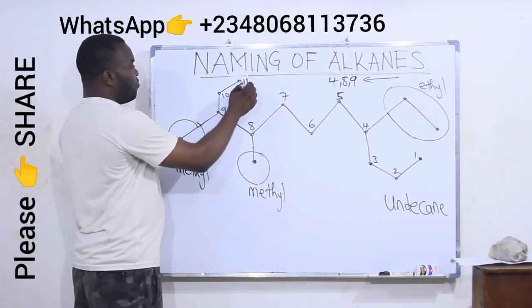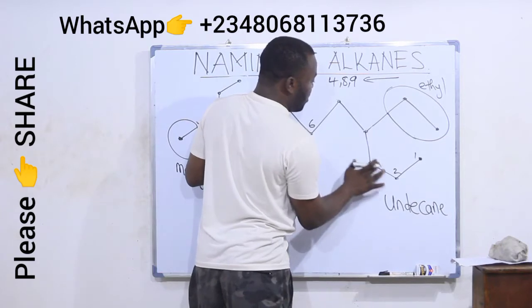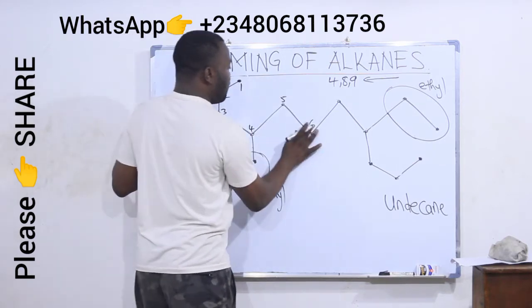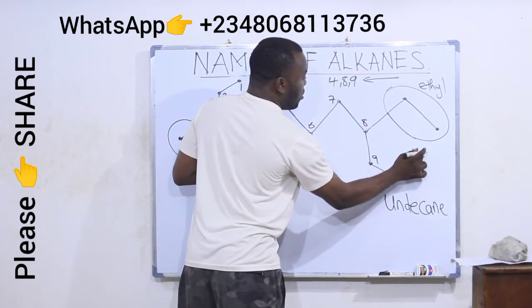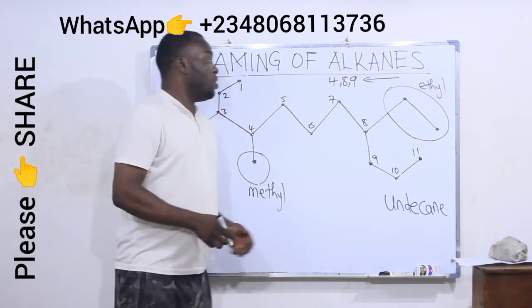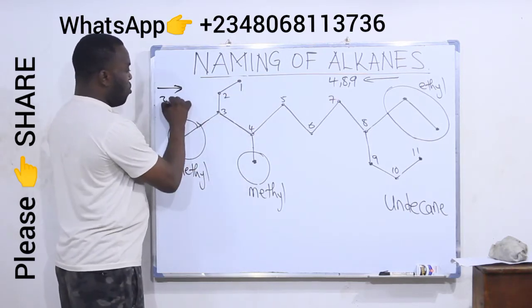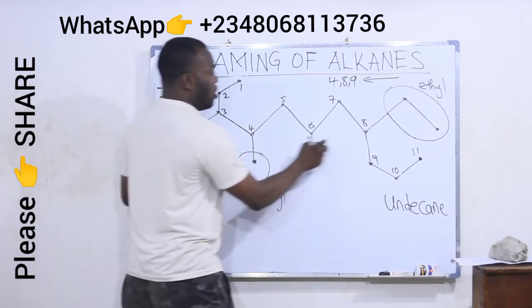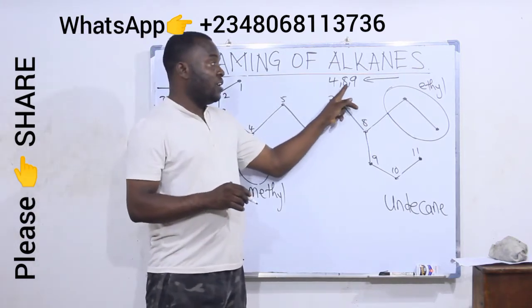Now what if I number from the other direction? The rule says number from the side that will give the attachments a lower number. If I start from the other end and count one through eleven, do not number the carbon atoms in the attachments — number only the carbon atoms in the longest chain. From this direction my attachments will be at positions three, four, and eight, giving 3, 4, 8. So 3, 4, 8 is lower than 4, 8, 9.